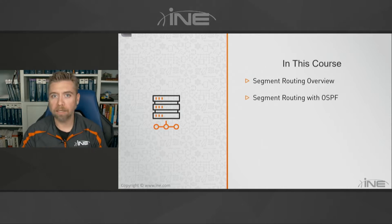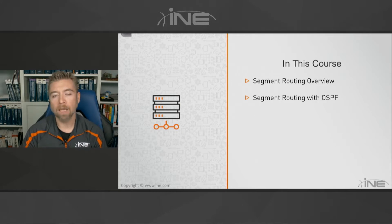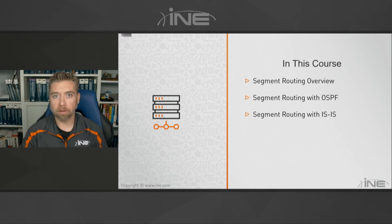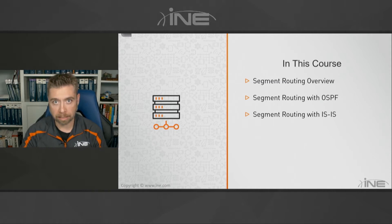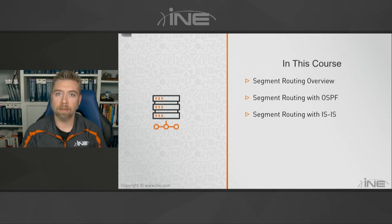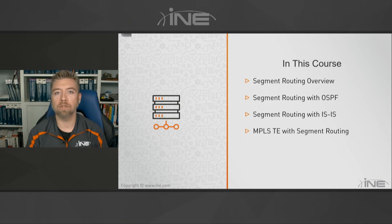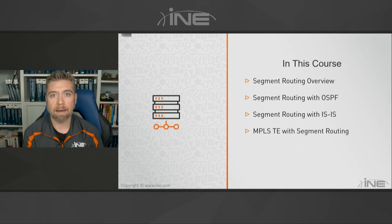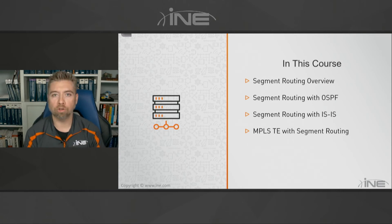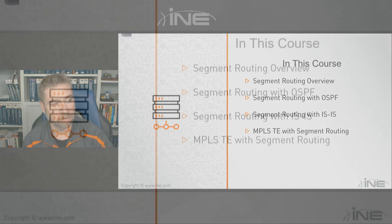We'll then look at two main config examples. One network is going to be running OSPF in the core of the service provider, and then we're going to be changing LDP over to segment routing. Then we'll have another example with ISIS routing, so very similar to OSPF, but of course from a configuration point of view there's going to be some key differences between a regular OSPF version 2 and ISIS. Last but not least, we're going to take a brief look at MPLS traffic engineering, and look at how that changes just a little bit when dealing with segment routing as opposed to regular MPLS.